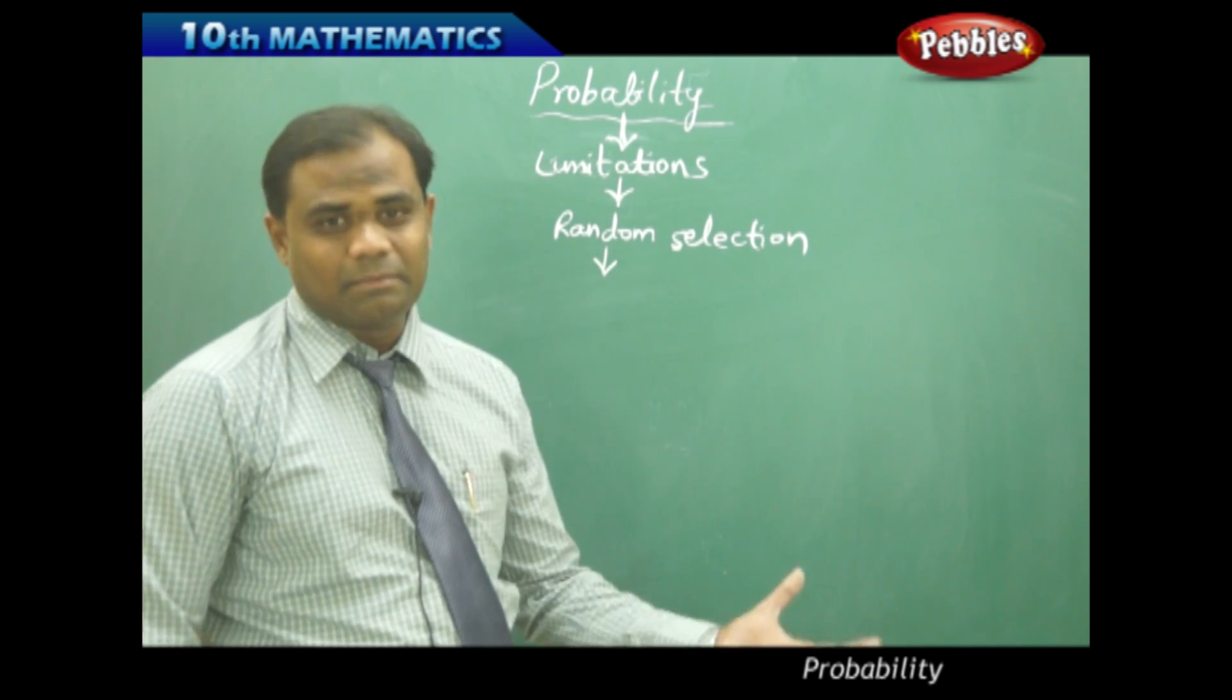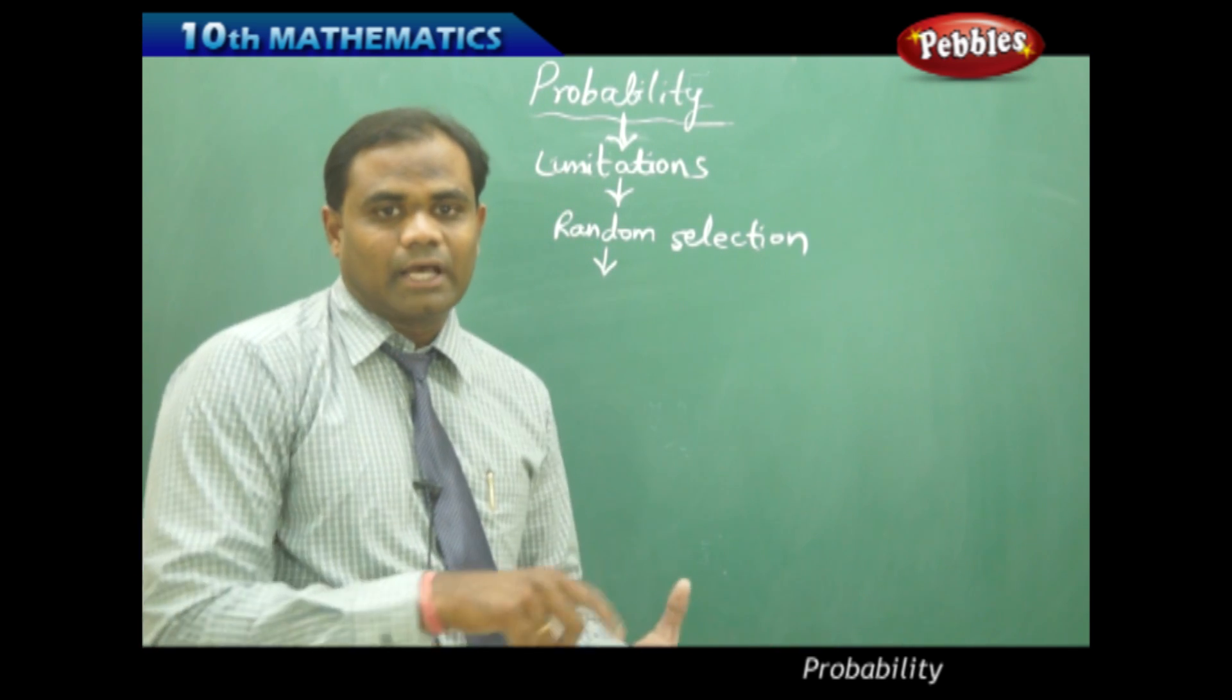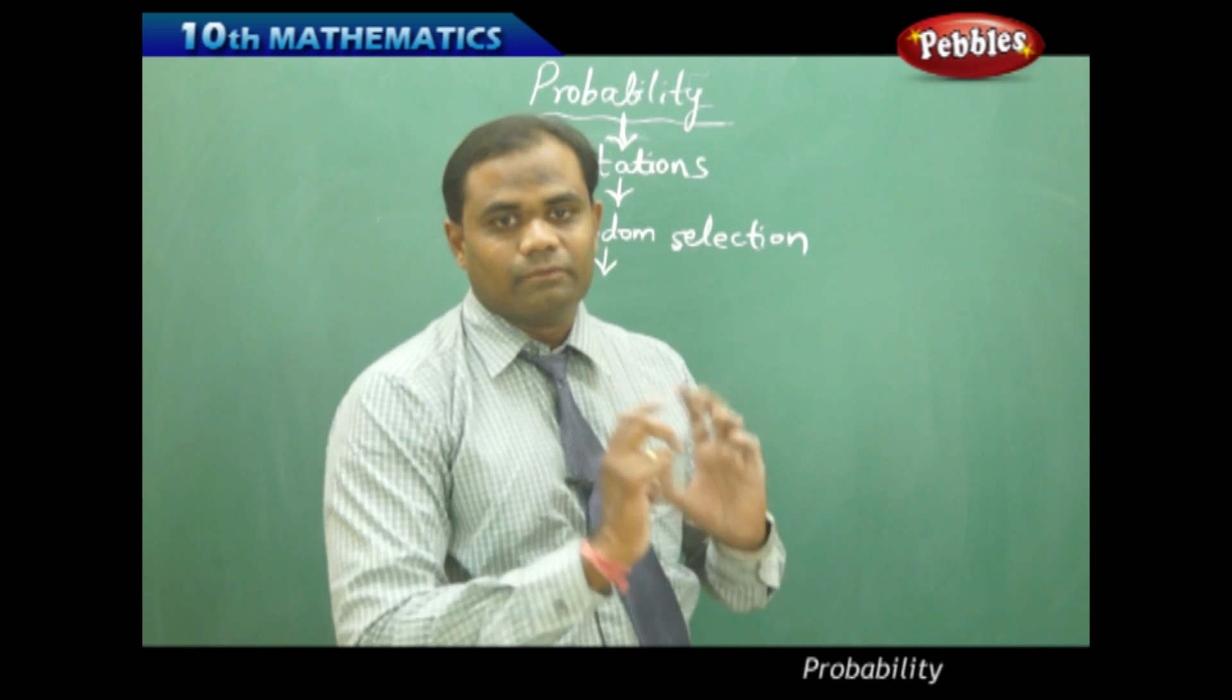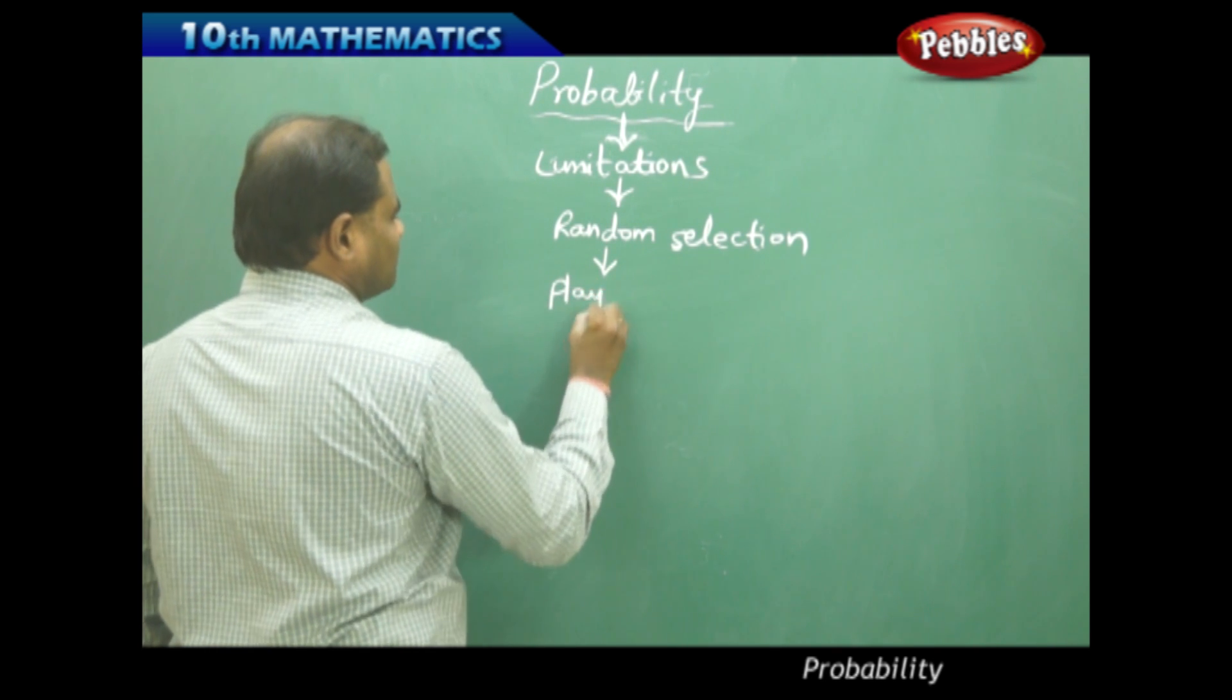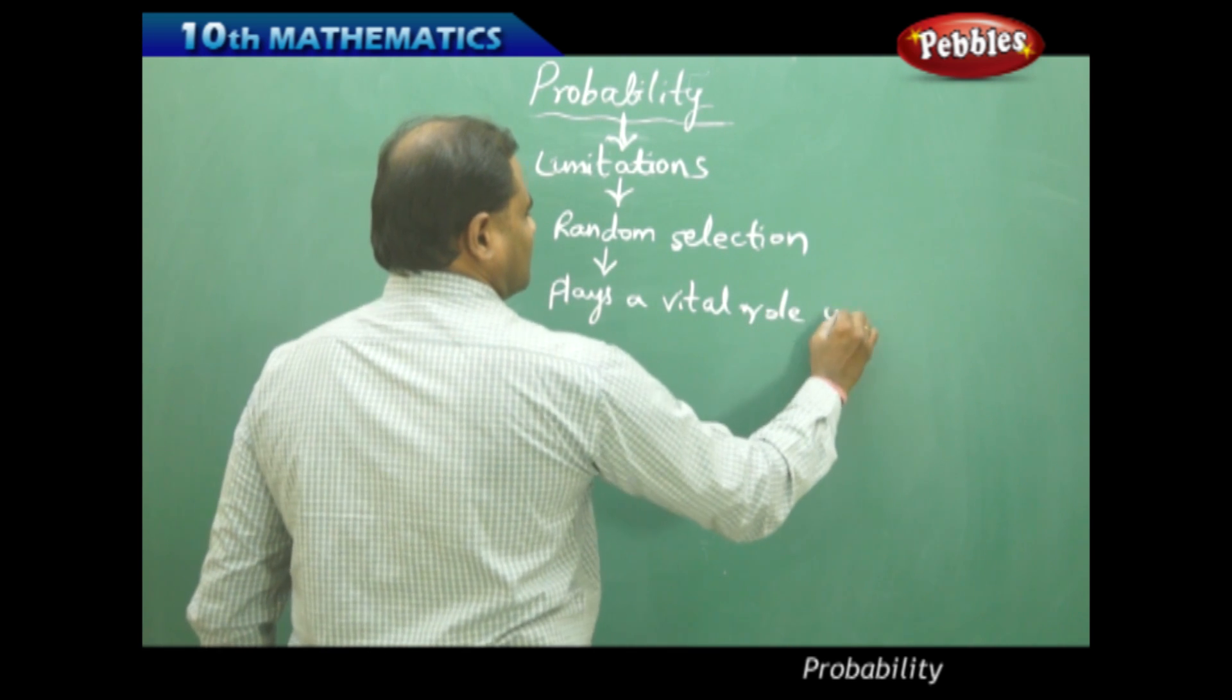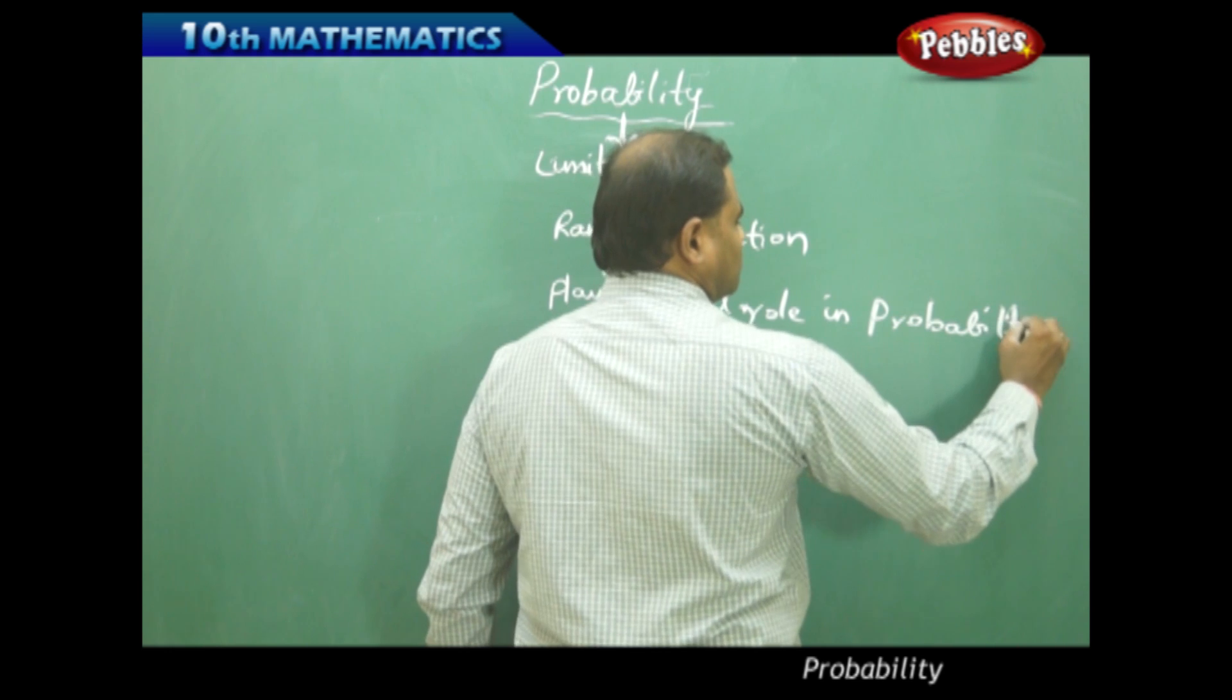For example, if I have a bag full of balls, I randomly pick one without any other rules, smartness, or cheating in picking a ball. Random selection plays a vital role in probability and calculation of probability.